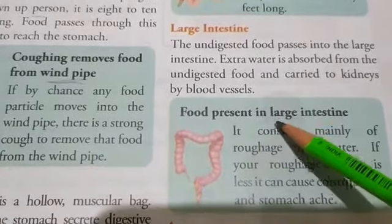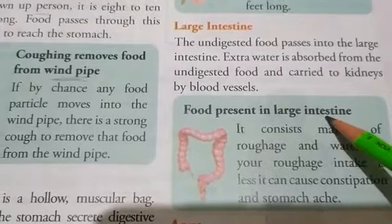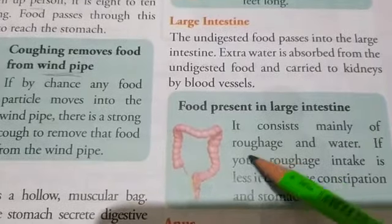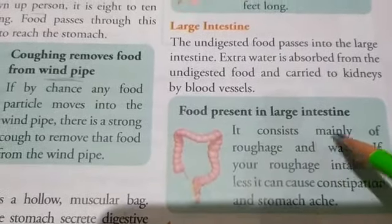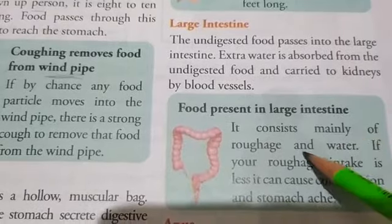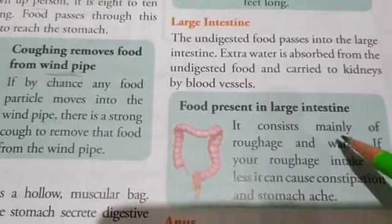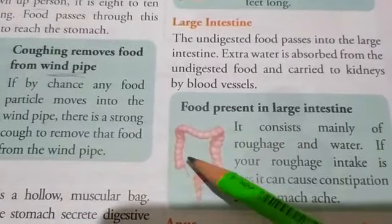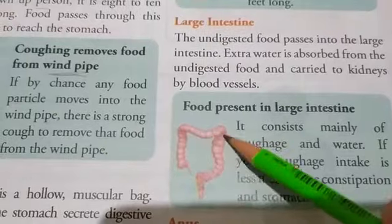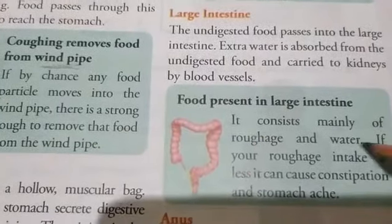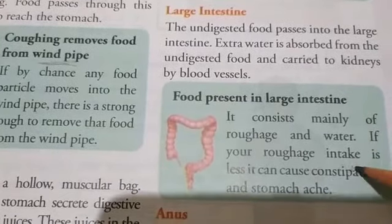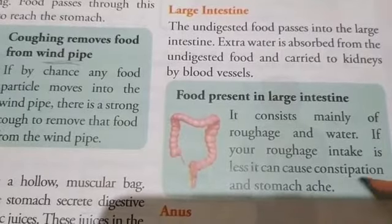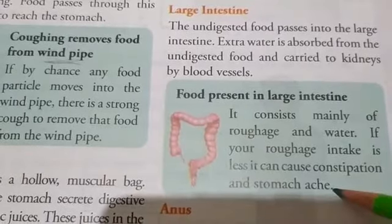What type of food is present in the large intestine? It consists mainly of roughage and water. If your roughage intake is less, it can cause constipation and stomach ache.